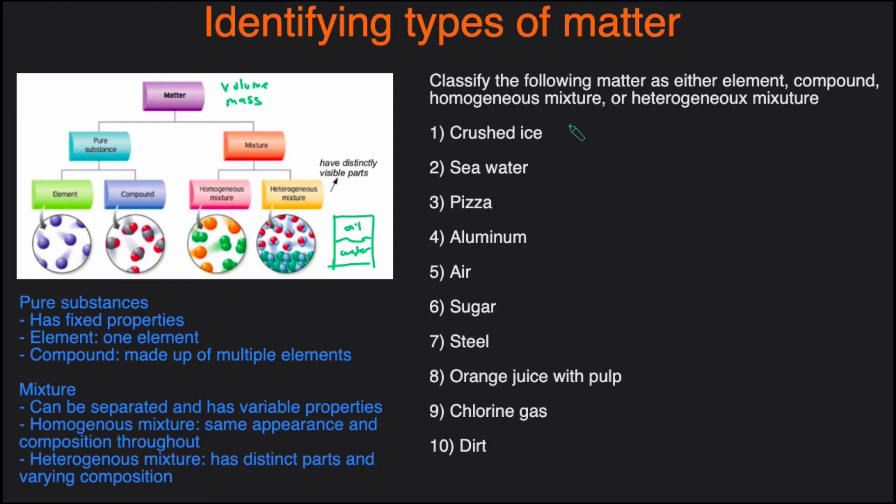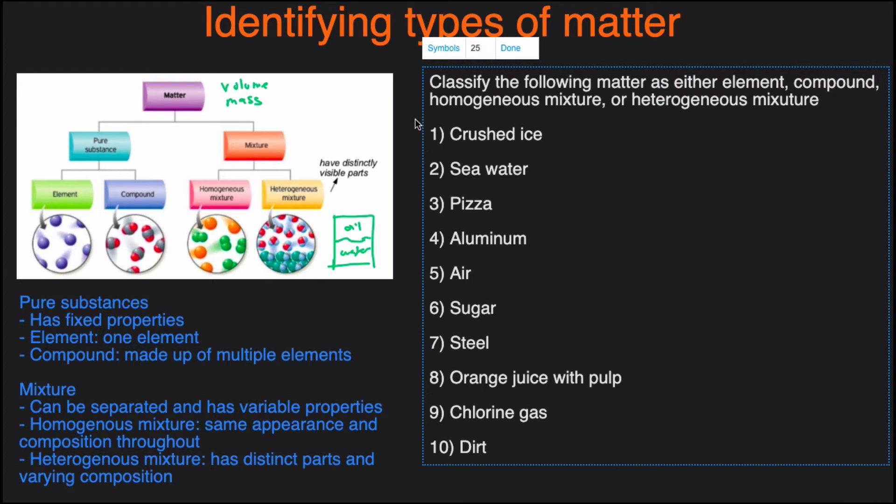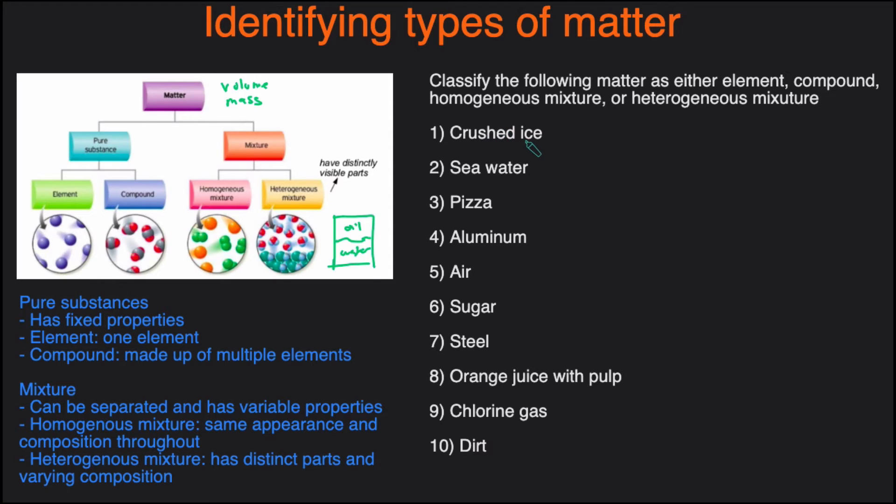Now let's take a look at this example. This example asks us to classify the following matter as either an element, a compound, a homogeneous mixture, or a heterogeneous mixture. So the first one, we have crushed ice. Crushed ice is just water in the solid form, and it's just water, so that means it's going to be a pure substance, and since it's made up of two elements, it is going to be a compound.